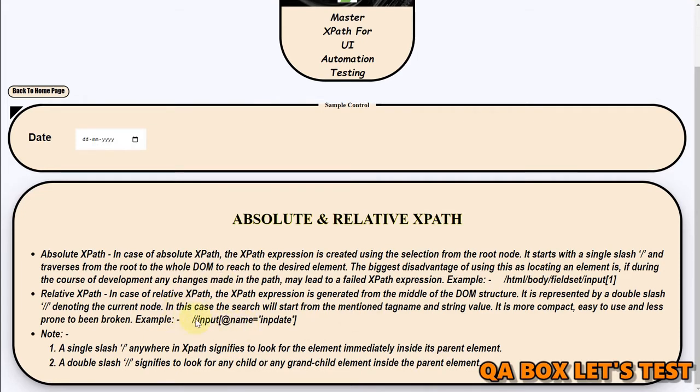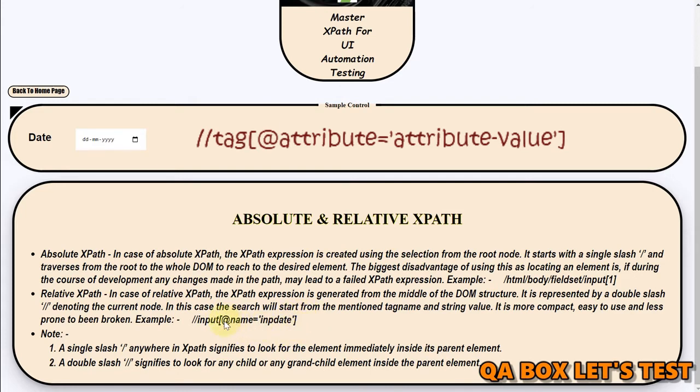We are saying, hey, in the whole DOM, look out for an element which has got the tag input. Then we have these square brackets and we are using this @ symbol we use for attribute. Then this is the name of the attribute and this is the value of that attribute. Plain and simple. We are not talking about from where you have to start traversing. We are saying in the DOM, find me this element.